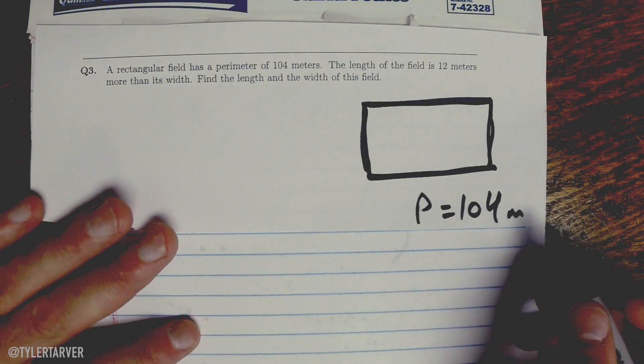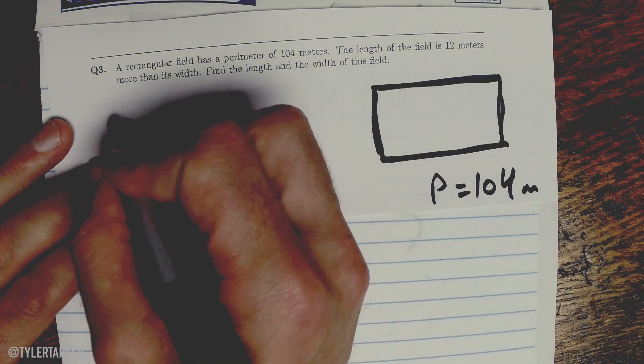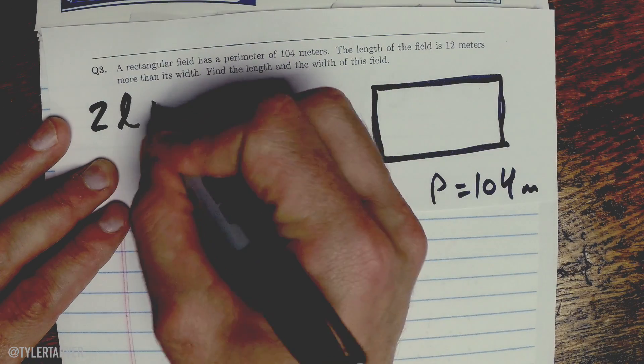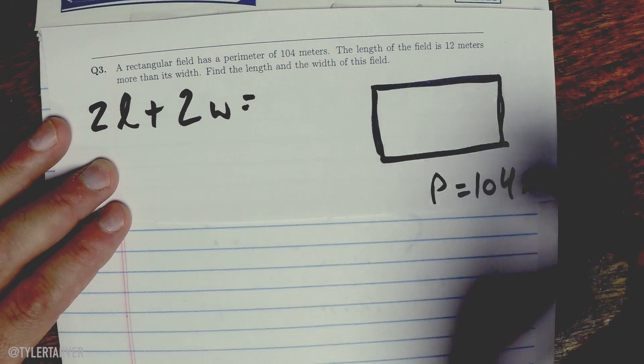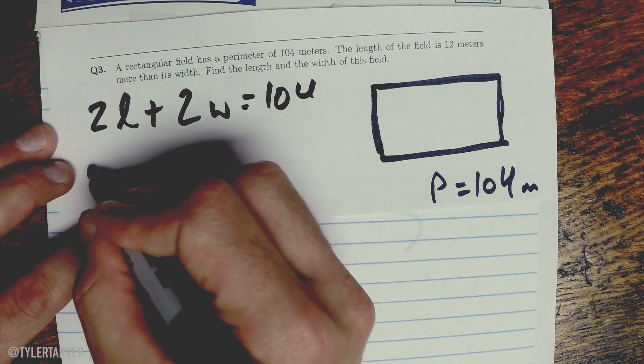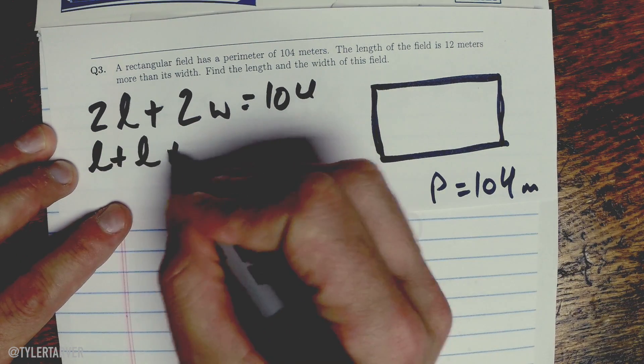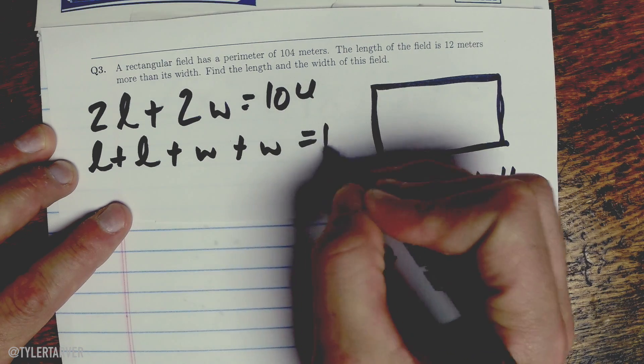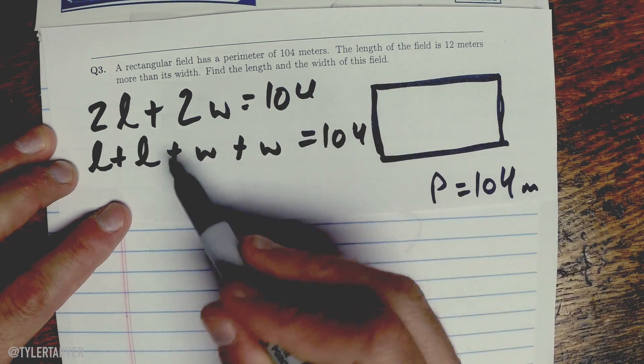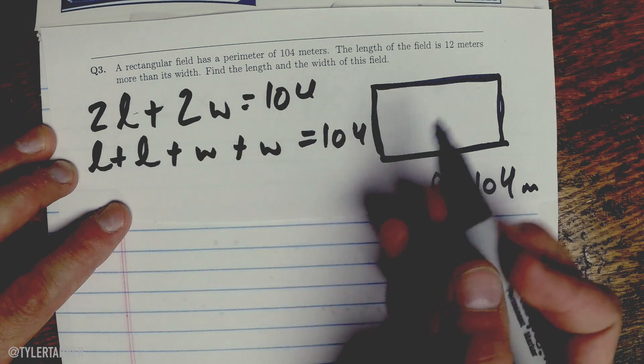We just want the perimeter. Okay, so the formula for perimeter is two times the length plus two times the width equals 104. Or you just say like length plus length plus width plus width equals 104. Doesn't matter. Okay, either one's gonna get your answer. All I'm doing is combining things.